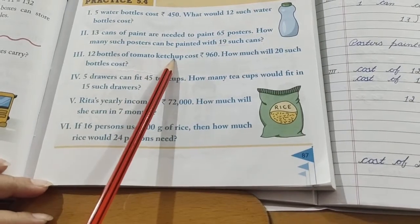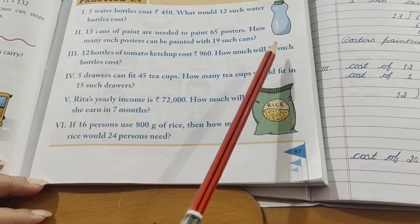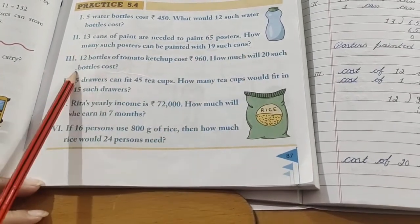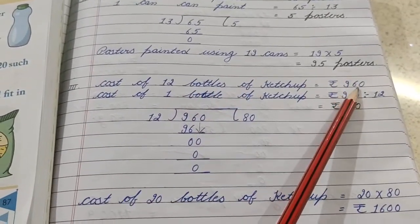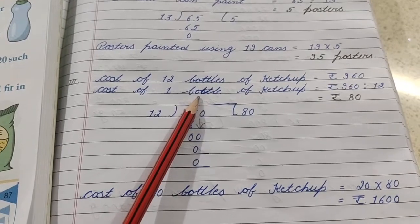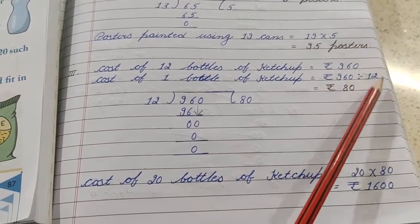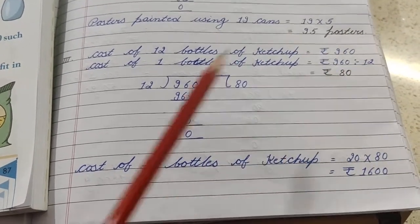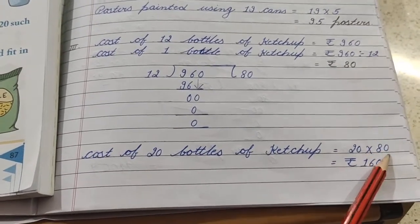Twelve bottles of tomato ketchup cost Rs. 960. How much will 20 such bottles cost? Cost of 12 bottles is given, we need to find cost of 20, and in between where will we go? To 1. Cost of 12 bottles Rs. 960, cost of 1 bottle, division method will apply as we're going from more to less. 960 divided by 12, this is our cost of 1 bottle. Now from 1 where do we go? To 20. So cost of 20 bottles, 20 multiply 80 equals Rs. 1600. So this is our answer.